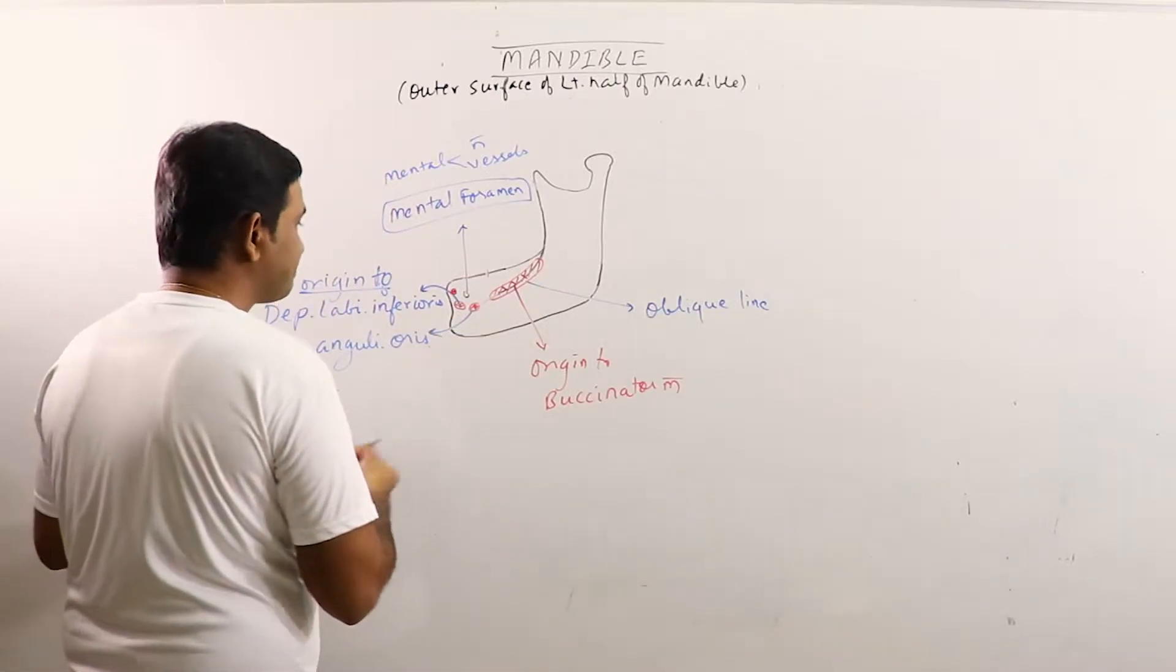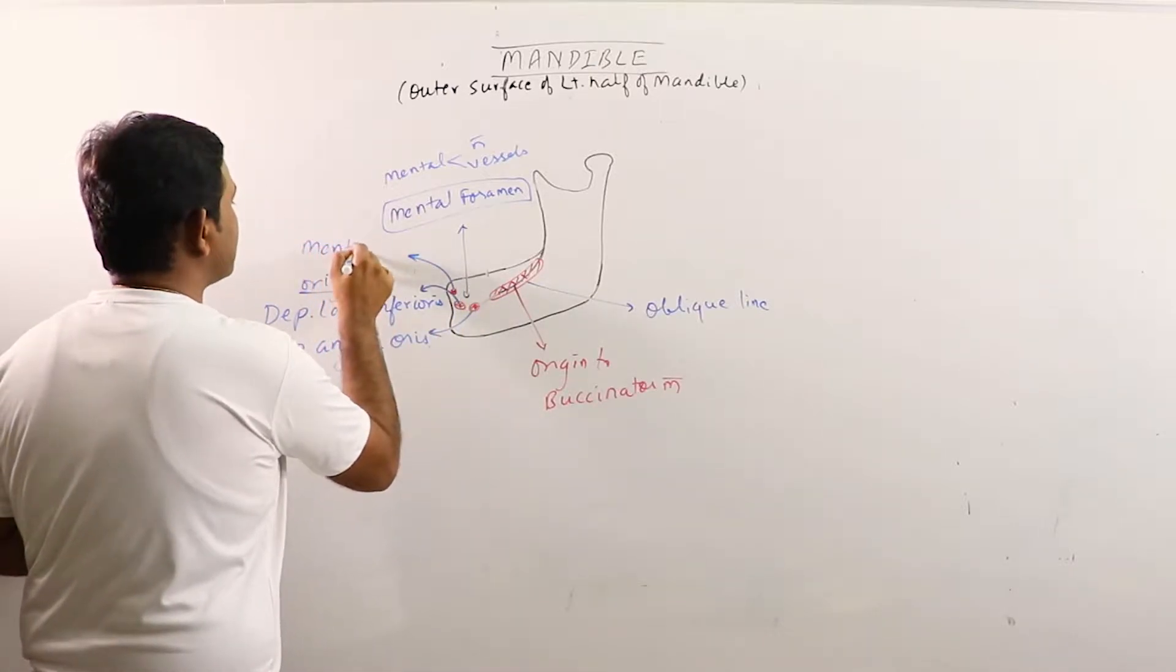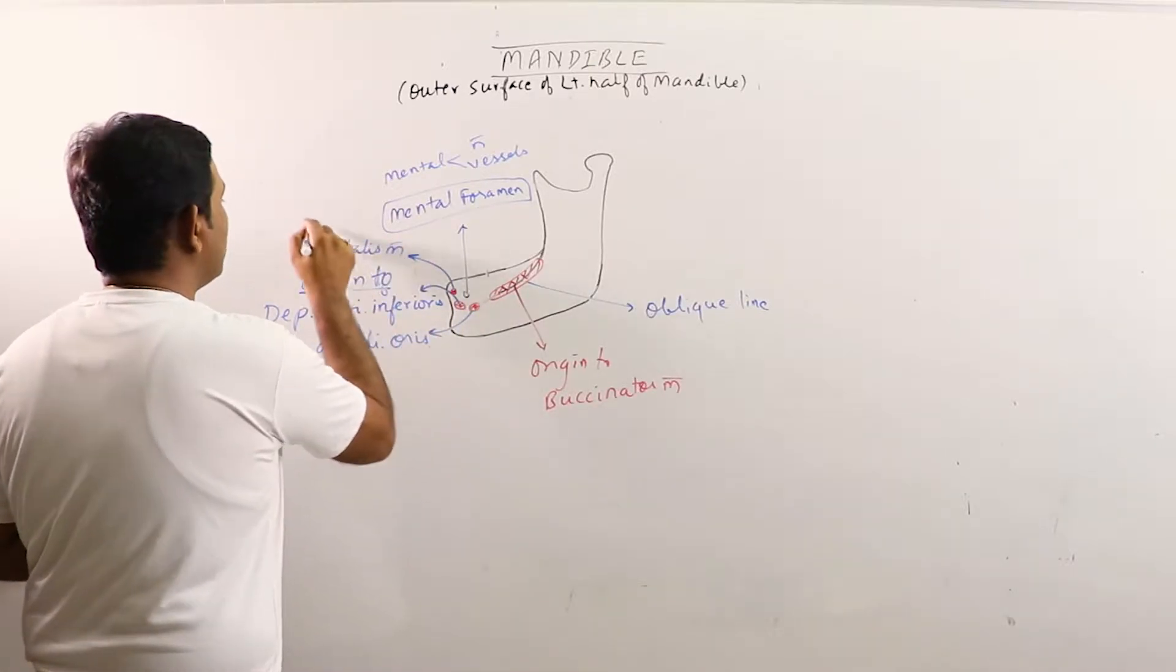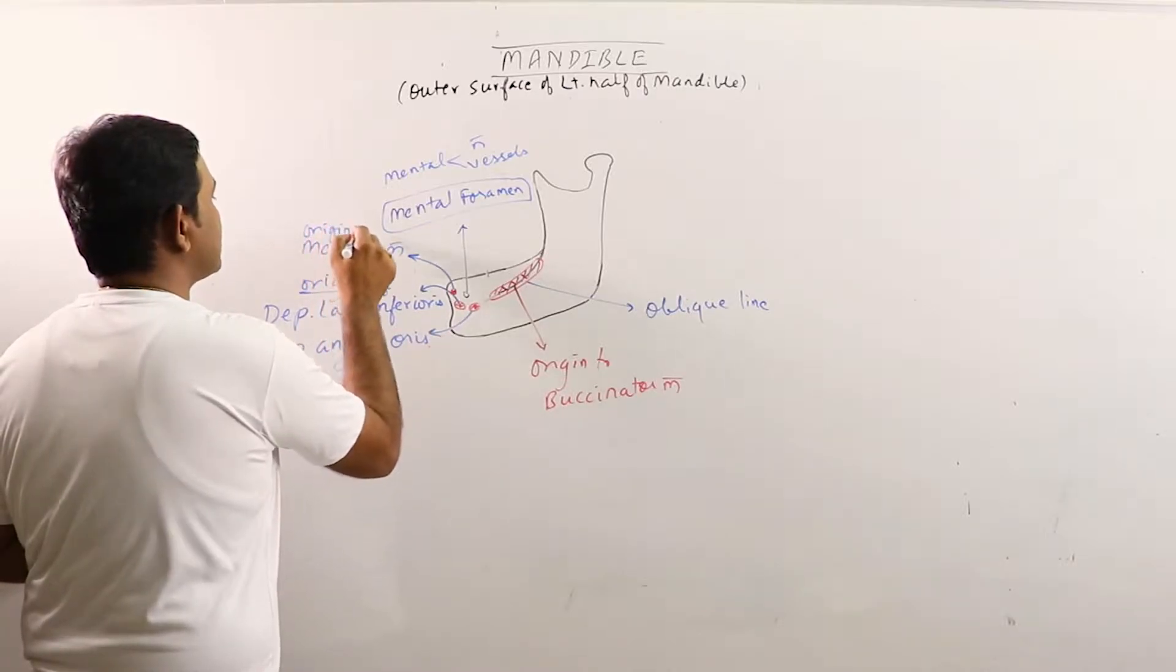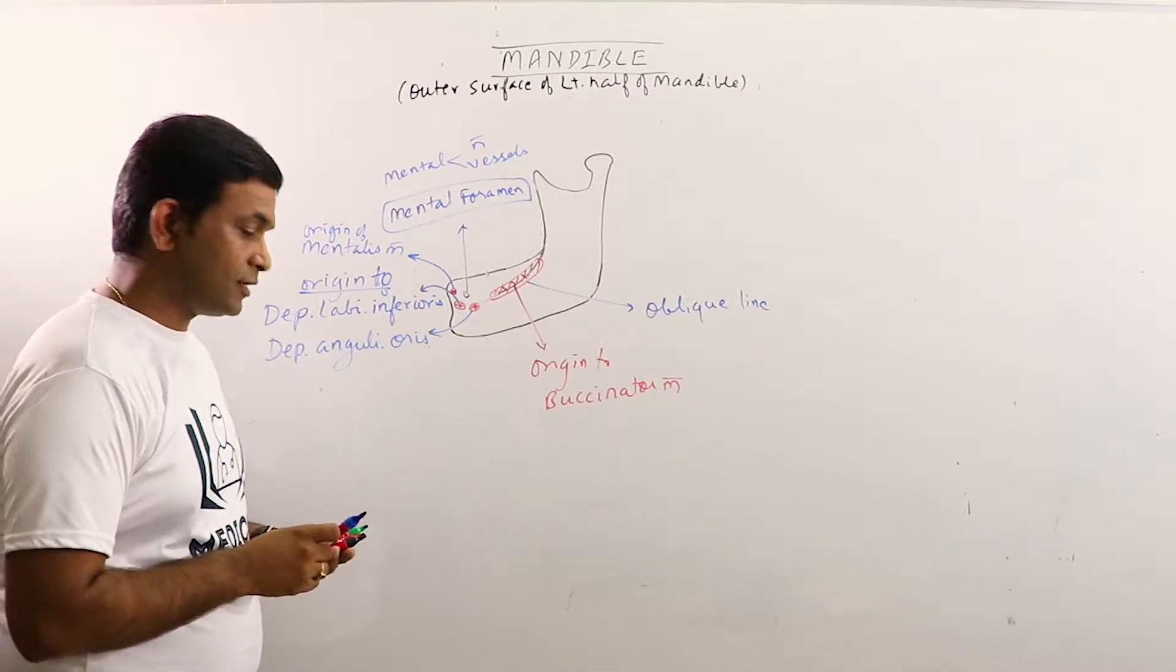One more origin. This is the mentalis muscle. Origin of mentalis muscle is located in the incisive fossa.